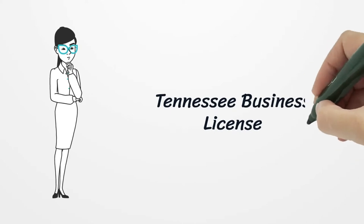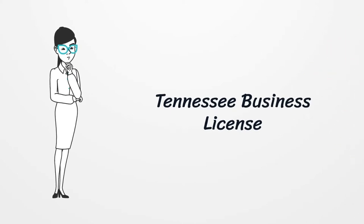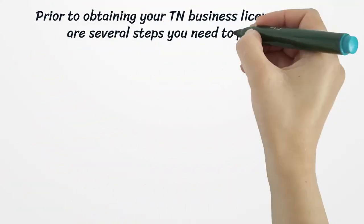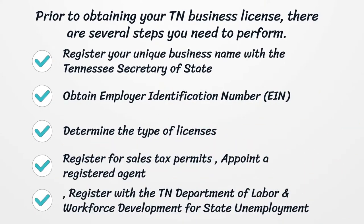Tennessee business license. Prior to obtaining your TN business license, there are several steps you need to perform: choose your business entity, register your unique business name with the Tennessee Secretary of State, obtain an employer identification number (EIN), determine the type of licenses, register for sales tax permits, appoint a registered agent, and register with the TN Department of Labor and Workforce Development for state unemployment tax.